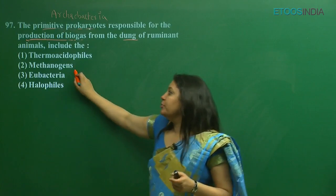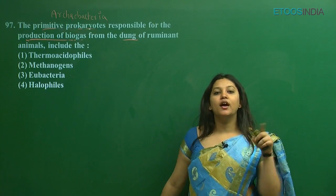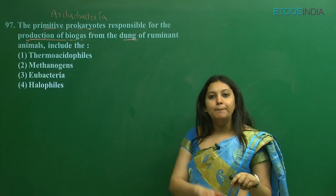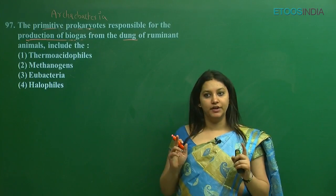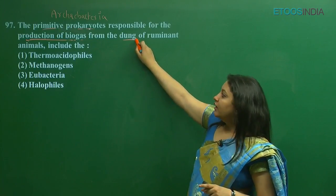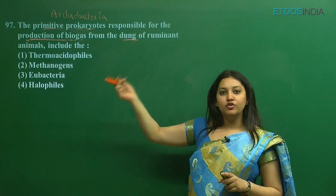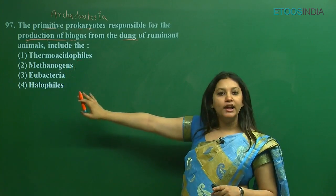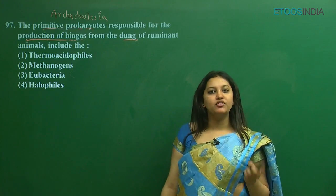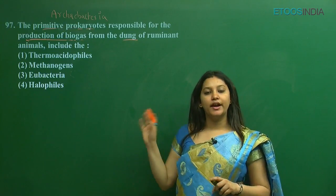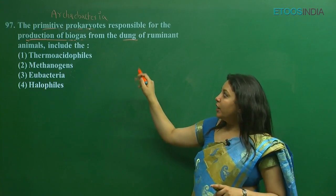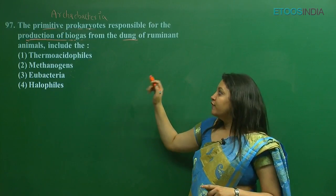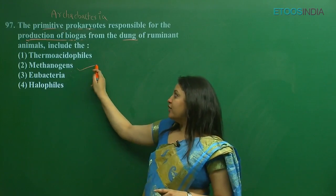Among these, methanogens are the methane-producing bacteria. They convert CO2 in swampy areas into methane, and also convert cow dung into biogas. So the answer is clearly methanogens. Halophiles are found in salty areas, thermoacidophiles are found in high-temperature areas. Methanogens is the correct option — they are responsible for the production of biogas.